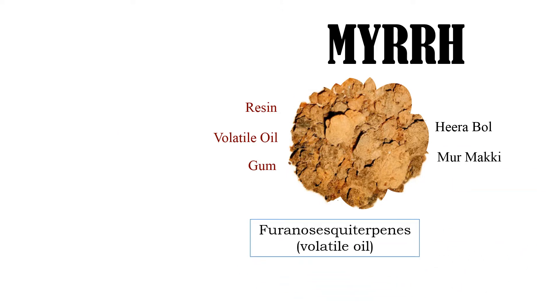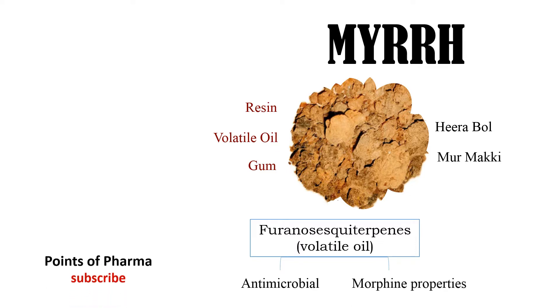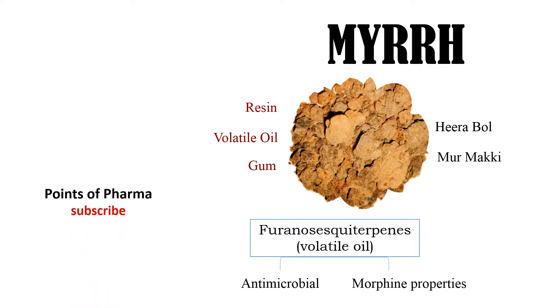Furano-sesquiterpene obtained from the volatile oil of Myrrh has antimicrobial and morphine-like properties. Today we will explore this component.